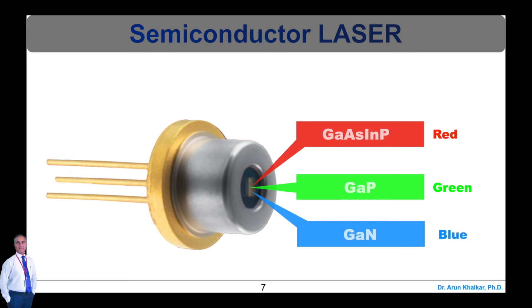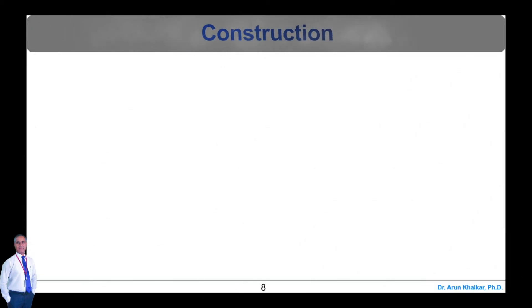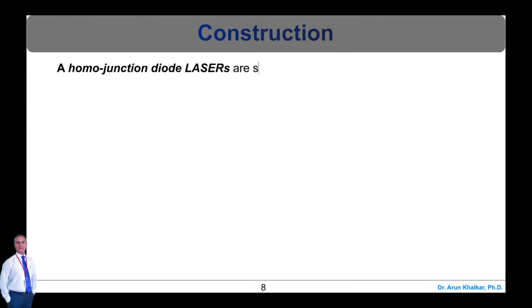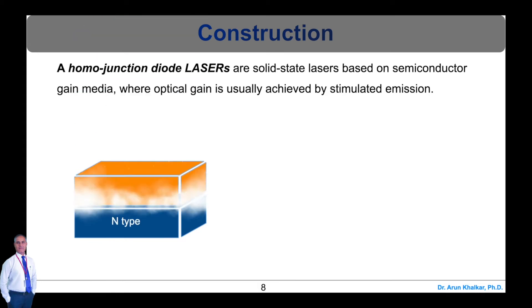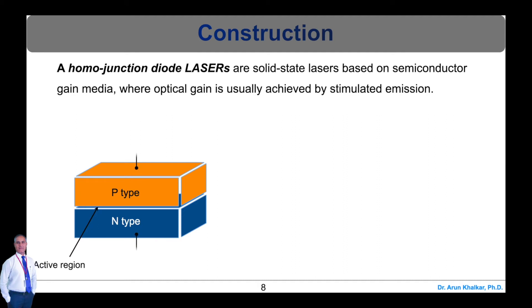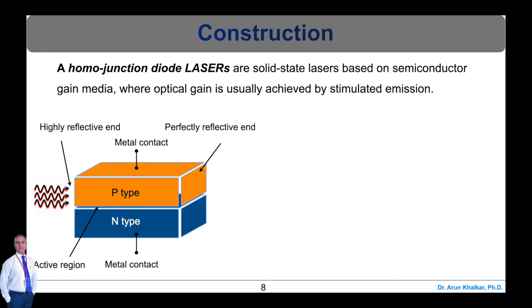Let's try to understand the physics behind the semiconductor laser. A semiconductor homojunction diode laser is a solid-state laser based on semiconductor gain media where optical gain is usually achieved by stimulated emission. It is usually fabricated using P-type and N-type semiconductor. A depletion layer is formed which acts as the active layer. The top and bottom faces have metal contacts to pass the current, and the front and rear faces are polished to constitute the resonator.